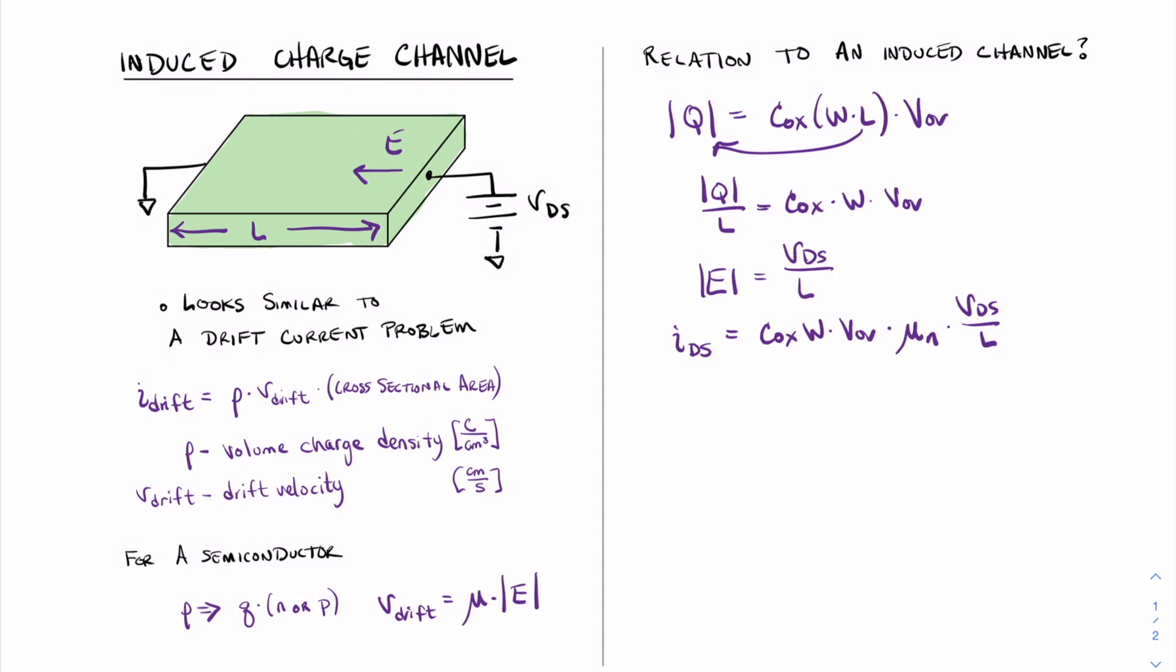And all we have to do now is rearrange this equation a little bit to make it more convenient looking. So first we're going to put the value mu in. Then we're going to put Cox. And then we're going to combine the distance metrics width divided by length. And then we're going to put our two voltages, the over voltage applied from gate to source, and the value VDS.